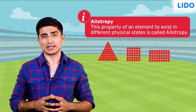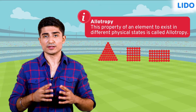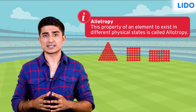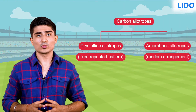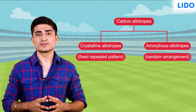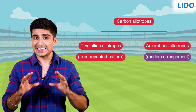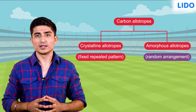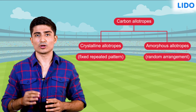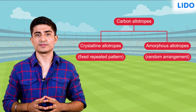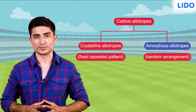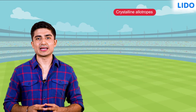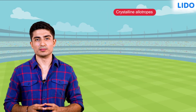This property of an element to exist in different physical states is called allotropy. Depending on whether the carbon atoms are arranged in a fixed pattern or in any random manner, the different states of carbon are classified into crystalline allotropes and amorphous allotropes. We're about to learn more about crystalline allotropes of carbon.